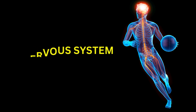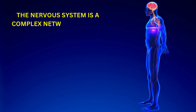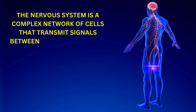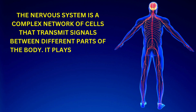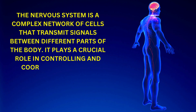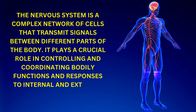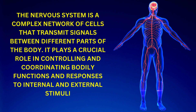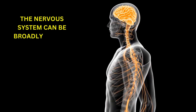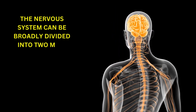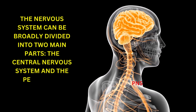The nervous system is a complex network of cells that transmit signals between different parts of the body. It plays a crucial role in controlling and coordinating bodily functions and responses to internal and external stimuli. The nervous system can be broadly divided into two main parts: the central nervous system and the peripheral nervous system.